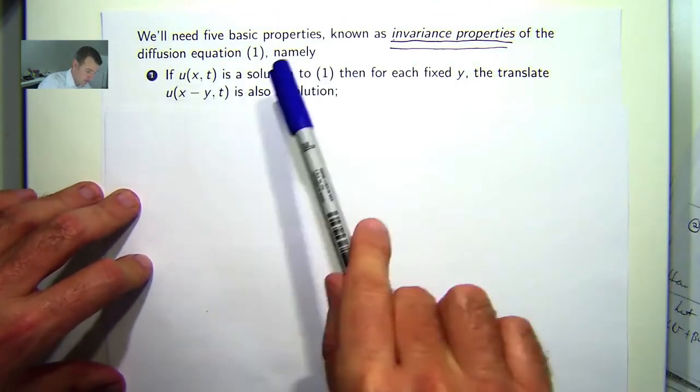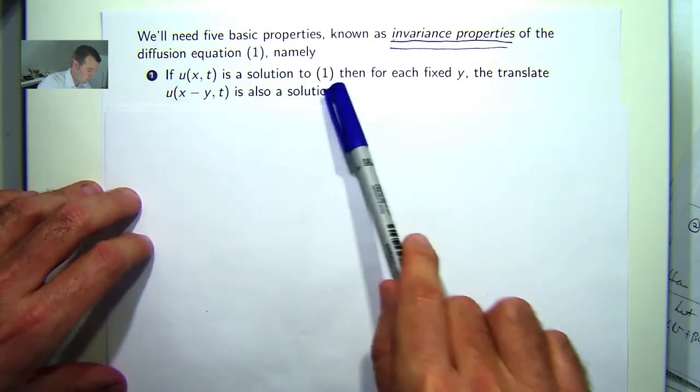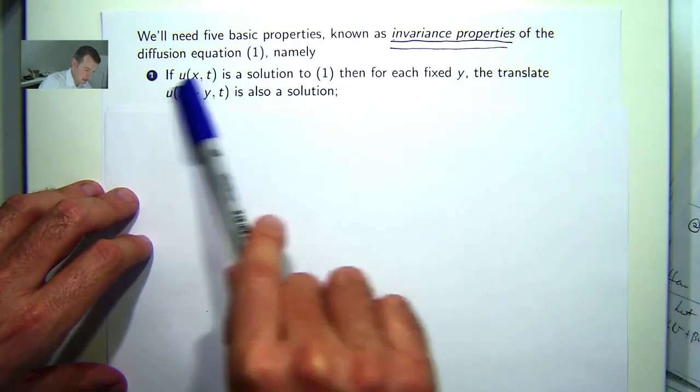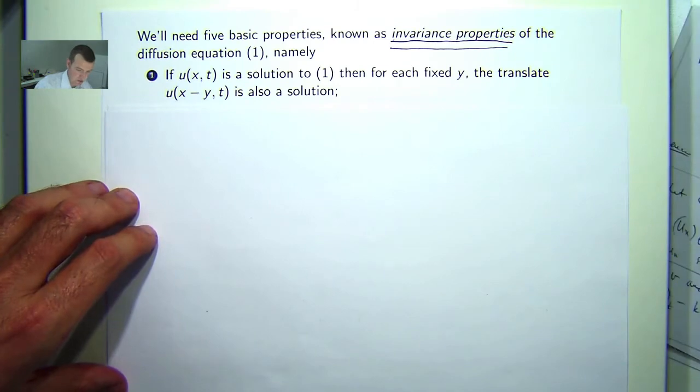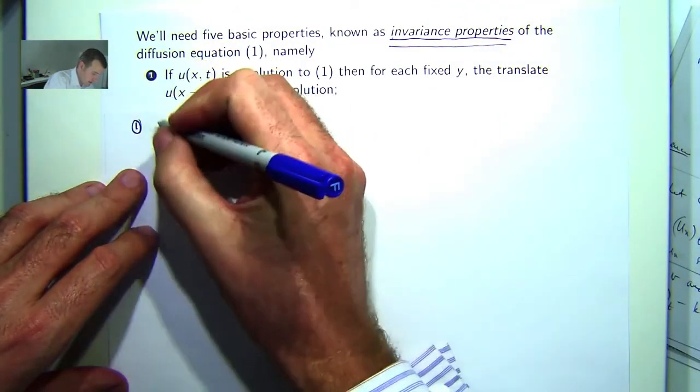So the first property is the following. If u(x,t) is a solution to 1, then for each fixed y, the translate u(x-y,t) is also a solution. So let me show you how to solve that or how to prove it.